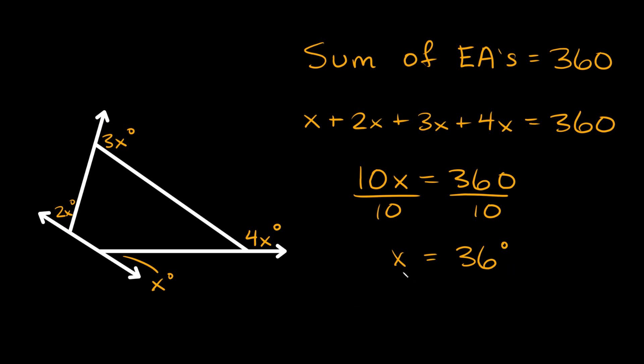So now that we know what x is equal to we can plug that into each one here. So this x over here would just be 36. Here we have 2 times x so 2 times 36 that's equal to 72 degrees. Here we get 3 times x or 3 times 36 and that's equal to 108 degrees and 4 times 36 is equal to 144 degrees.